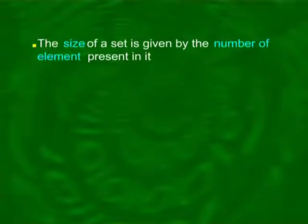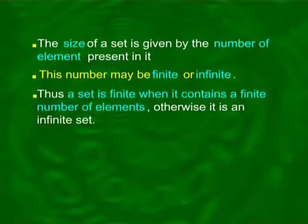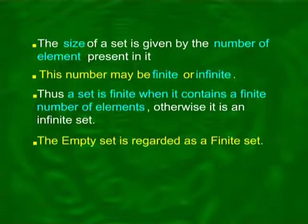It should be kept in mind that the repetition of an element, or the change of order of elements in a set, does not alter the set — meaning {1, 3, 5} is the same set as {5, 3, 1} or {5, 1, 3}. The size of a set is given by the number of elements present in it, denoted by n(A). This number may be finite or infinite. A set is finite when it contains a finite number of elements; otherwise it is called an infinite set. The empty set is regarded as a finite set.